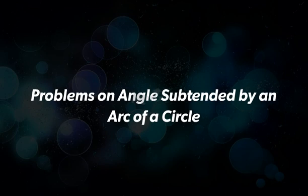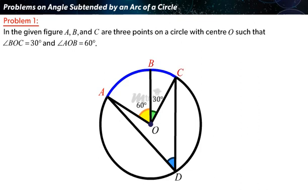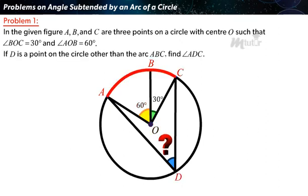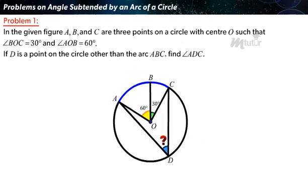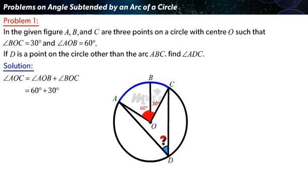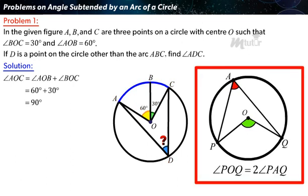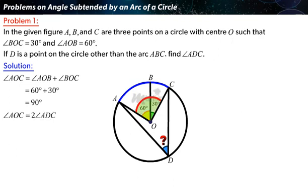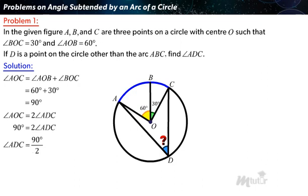Problems on angles subtended by an arc of a circle. In the given figure, A, B, and C are three points on a circle with center O, such that angle BOC equals 30 degrees and angle AOB equals 60 degrees. If D is a point on the circle other than the arc ABC, find angle ADC. From the figure, angle AOC equals angle AOB plus angle BOC, that is 60 degrees plus 30 degrees, which equals 90 degrees. Arc ABC subtends angle AOC at the center of the circle and angle ADC at point D. Since the angle subtended by an arc at the center is double the angle subtended at any point on the remaining part of the circle, angle AOC equals twice angle ADC. Substituting, angle AOC is 90 degrees, so angle ADC equals 45 degrees.